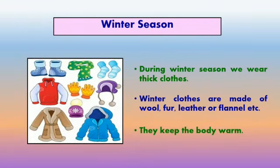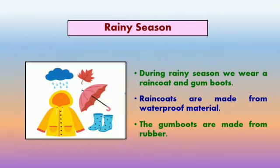During the winter season we wear thick clothes. They are made of wool, fur, leather, flannel, etc. They keep our body warm. In the rainy season we wear a raincoat and gum boots. Raincoats are made from waterproof material and thus protect us from rain. The gum boots are made from rubber.